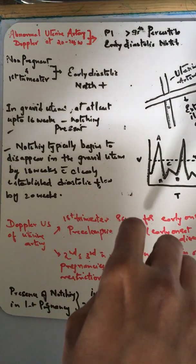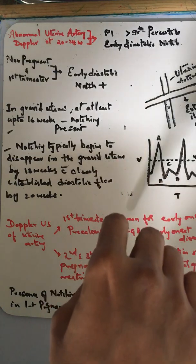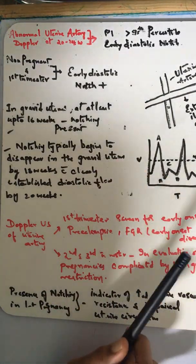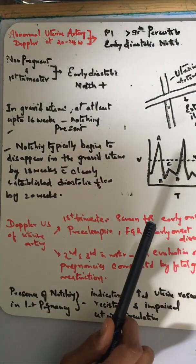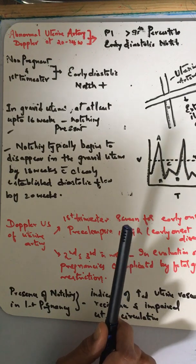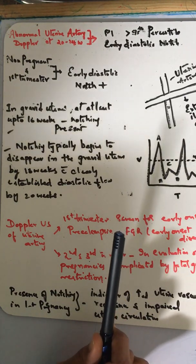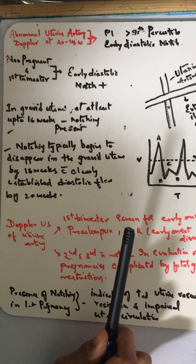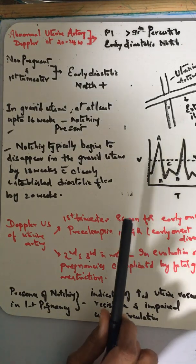Gently tilt the transducer from side to side using color flow. Then apply a pulsed wave Doppler with a sampling gate of 2 mm and angle of insonation of less than 20 degrees and take the PI.